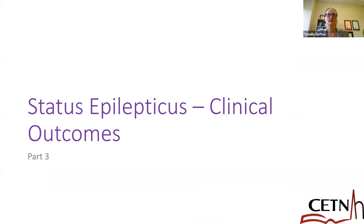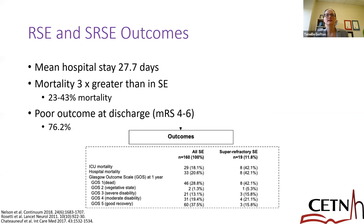Regarding outcomes: with refractory and super refractory status epilepticus, patients do less well than with status epilepticus itself. The mean hospital stay is quite a bit longer at almost a month. Patients have much higher mortality — anywhere between 23 and 43 percent depending on the study. Outcomes at discharge are difficult to predict and often quite poor, measured by modified Rankin score between four and six. Data from a group in France shows that super refractory status epilepticus has higher ICU mortality, higher hospital mortality, and less good clinical outcomes compared to status epilepticus overall.